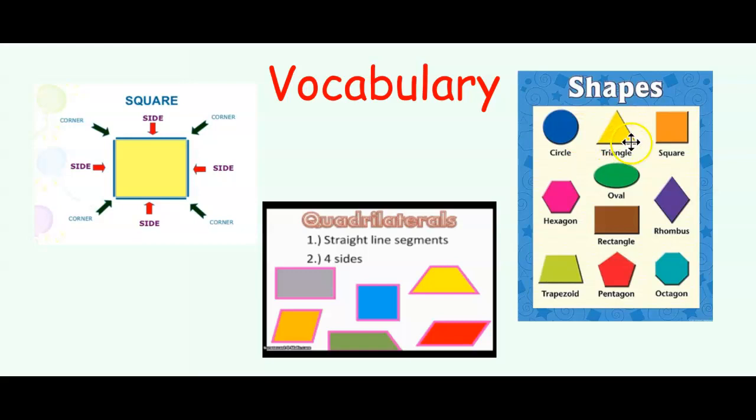Remember, we reviewed the shapes circle, triangle, square, oval, hexagon, rectangle, rhombus, trapezoid, pentagon, and octagon. Maybe later today, you can draw these shapes and write their names under each shape to help you remember their names.